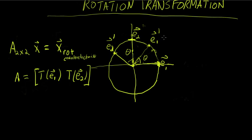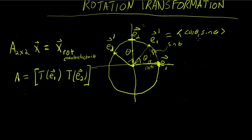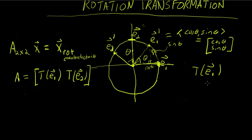So what is E1 prime? What are the components of E1 prime? Well, we know the x-component is cosine theta, and the y-component is sine theta. So this vector can be represented as (cosine theta, sine theta). We know then that the transformation of E1, T(E1), is equal to (cosine theta, sine theta). So we've figured out one of the two columns in the matrix.